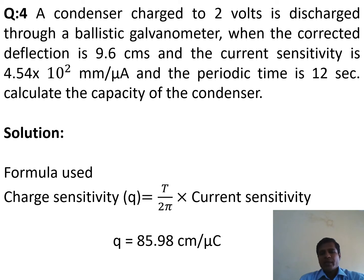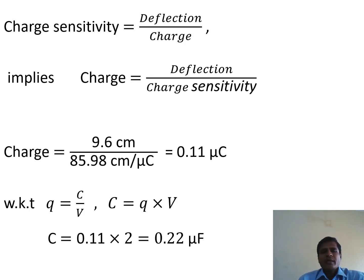Substituting T = 12 seconds and current sensitivity = 4.54 × 10² mm/μA into the charge sensitivity formula, the charge sensitivity Q = 85.98 centimeters per microcoulomb. Since charge sensitivity = deflection / charge, the charge = deflection / charge sensitivity = 9.6 cm / 85.98 cm/μC, giving Q = 0.11 microcoulombs.